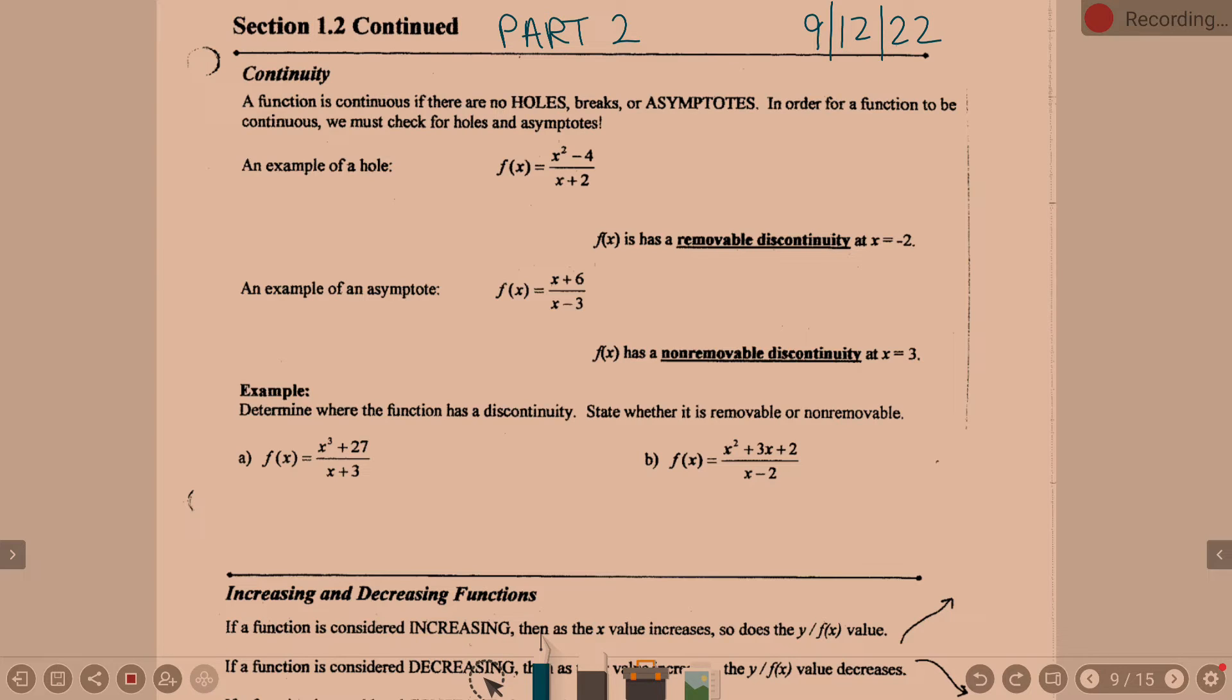Now, a function is continuous if there are no holes, breaks, or asymptotes. The two big things we're going to focus on here, holes and asymptotes. In order for a function to be continuous, we must check for holes and asymptotes.